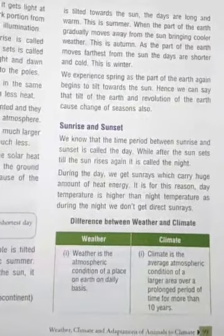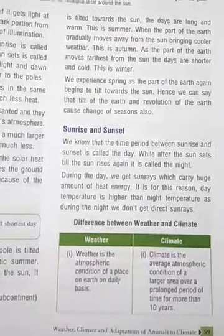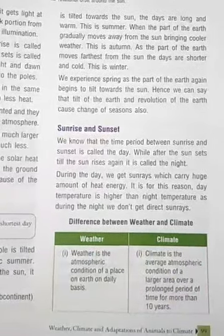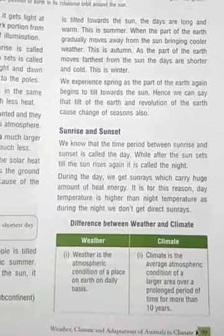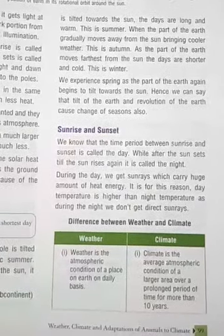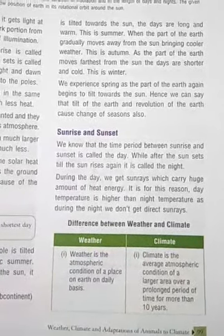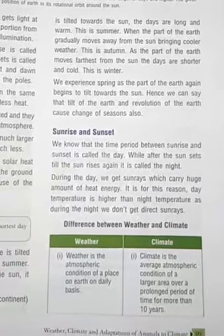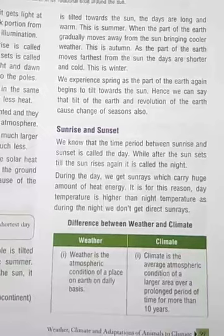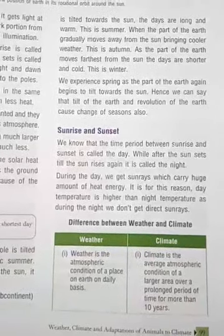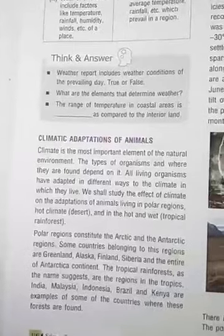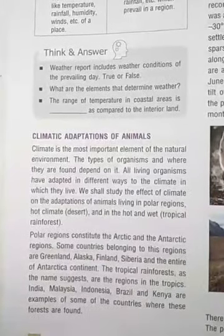Next is sunrise and sunset. The time period between sunrise and sunset is called a day, and after sunset until sunrise again is called night. During the day we receive sunlight carrying a huge amount of heat energy, which is why daytime temperatures are higher than night temperatures.